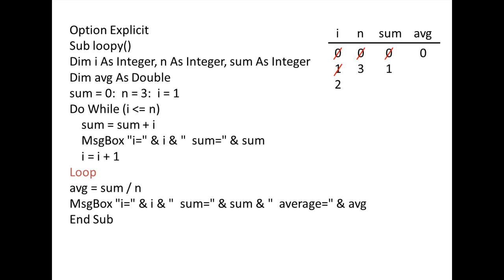We reach the loop statement and evaluate the test condition. Is i less than or equal to n? Is 2 less than or equal to 3? This expression is TRUE, so we enter the loop again. Sum is assigned the current value of sum plus i, which is 1 plus 2 or 3. A message box then displays the current values of i and sum, which are 2 and 3. i is then assigned the current value of i plus 1, which is 2 plus 1 or 3.